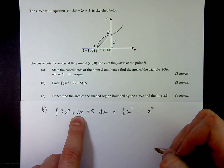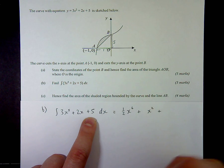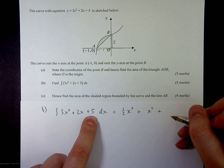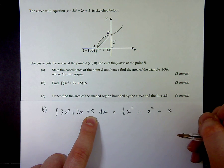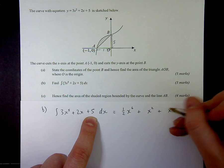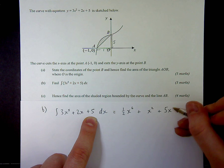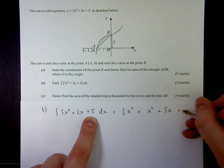And finally with the 5, I'm going to increase the power on the x. At the moment it's x to the 0, so it's going to become x to the 1, or just x, and divide through by 1, which leaves the 5, plus a constant of integration at the end. And that's 3 marks, pretty straightforward.